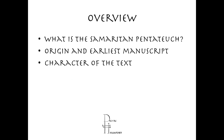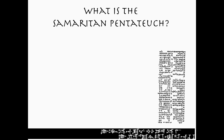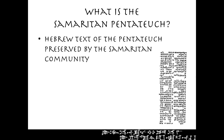Today we're going to look at what the Samaritan Pentateuch is, its origin, the earliest manuscript that we have, and finally the general character of the text. So what is the Samaritan Pentateuch? It's the Hebrew text of the Pentateuch preserved by the Samaritan community. It is a consonantal text, so it generally does not have vowel pointing. The Samaritan community did have some vowel pointing that it used sporadically, but generally speaking no, and you can see it off to the right there.